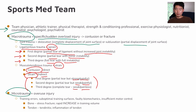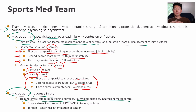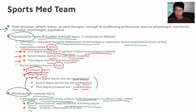Microtrauma is an overuse injury. Whereas macrotrauma is caused by something very specific and stressful overloading the tissue, microtrauma is due to repetitive overuse. Things like training errors, suboptimal training surfaces, faulty biomechanics, and insufficient motor control can overload a tendon or muscle. At the bone, stress fractures can result from rapid increases in training volume — commonly seen in youth athletes. At the tendon, you can get tendinitis, such as tennis elbow, from that repetitive overuse.